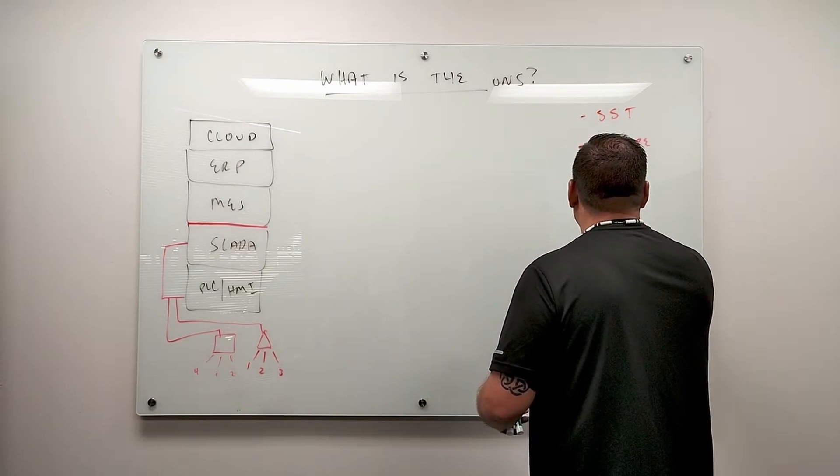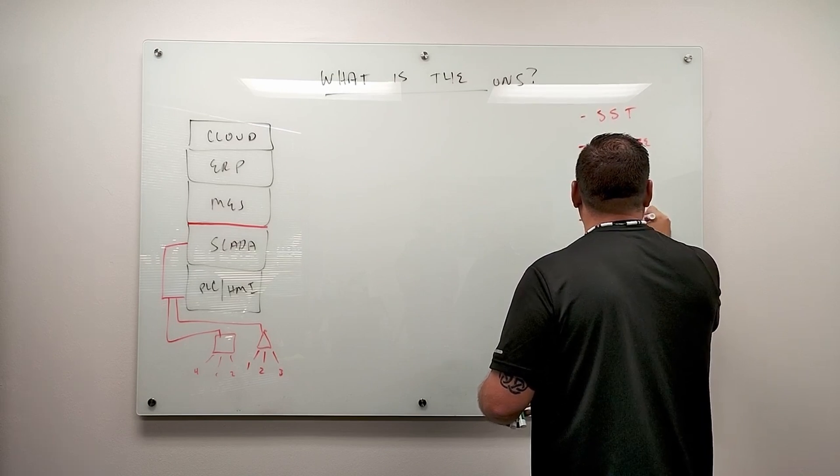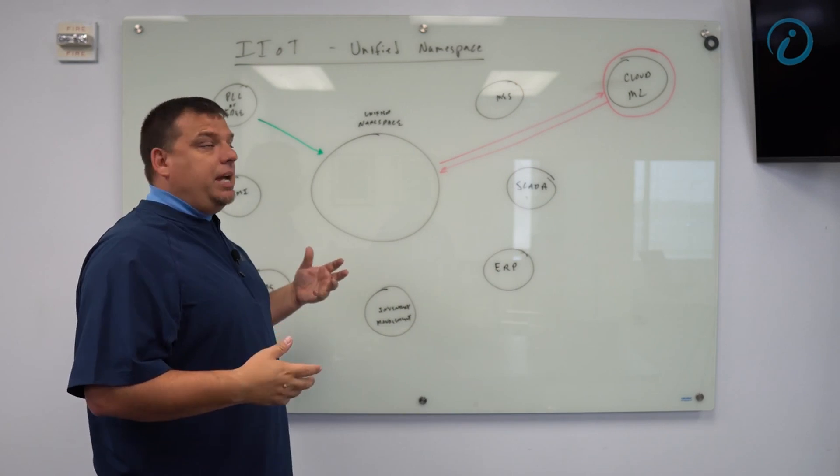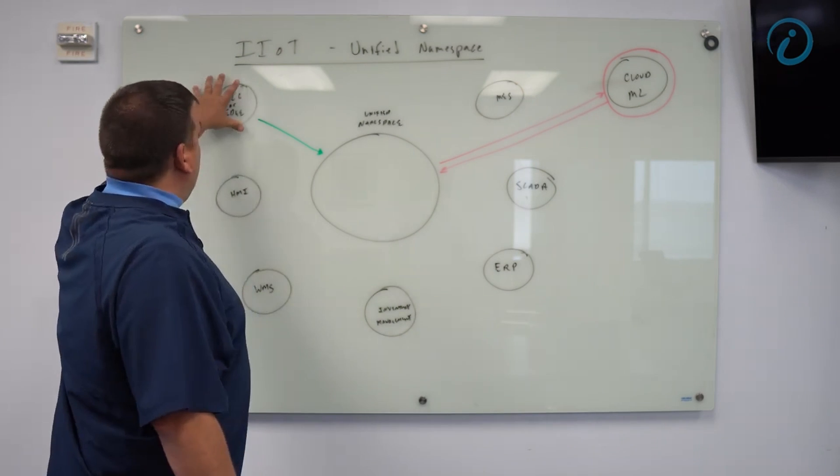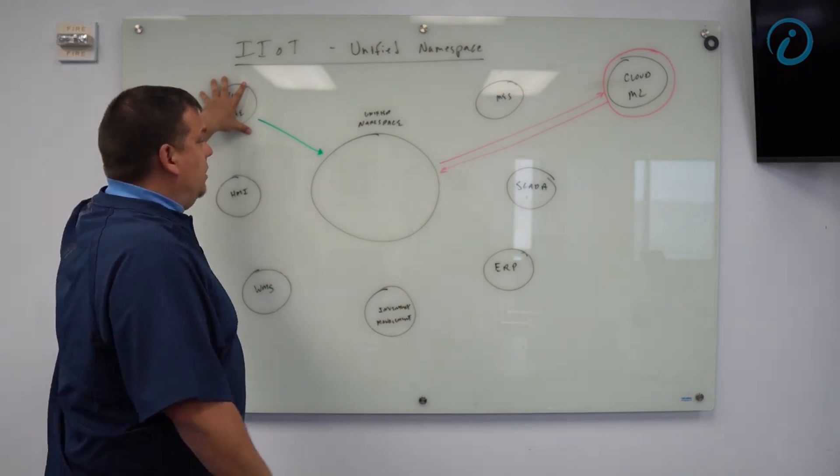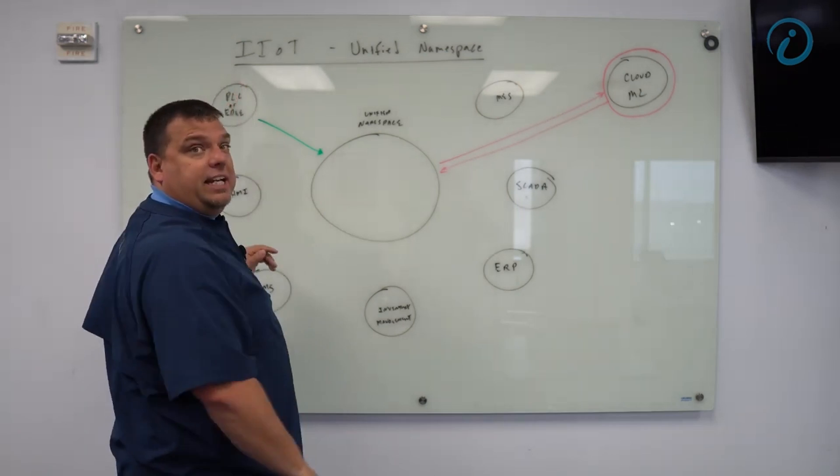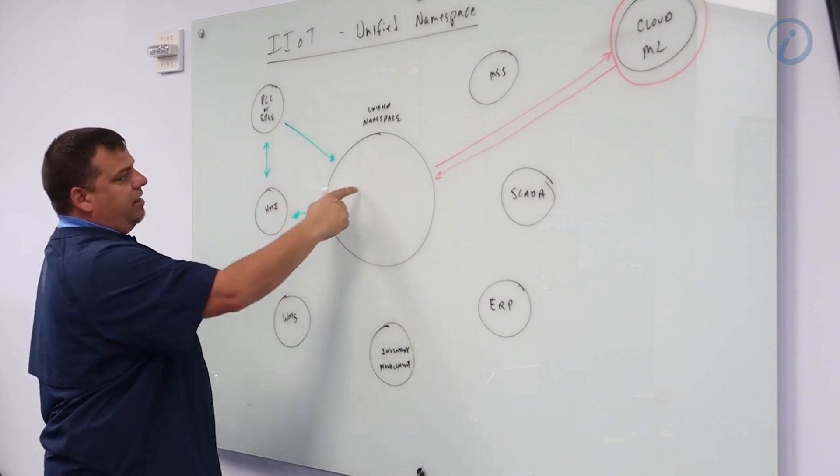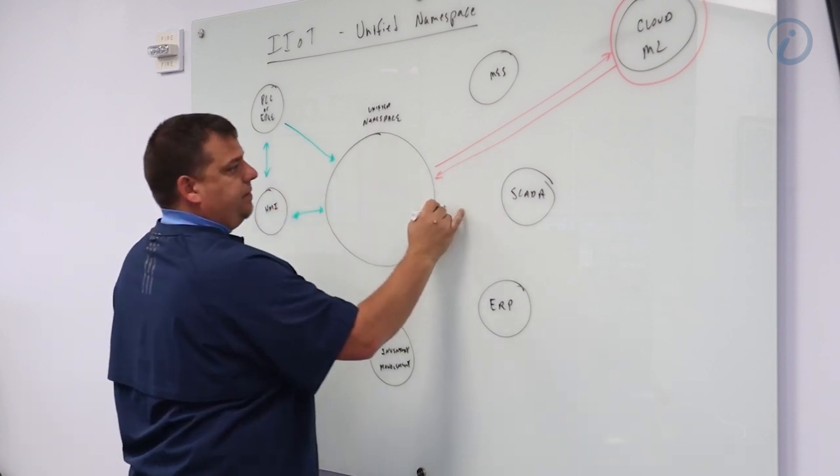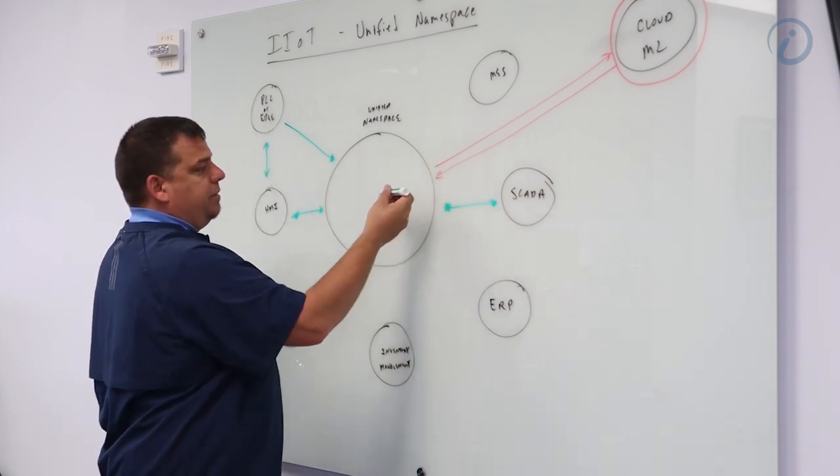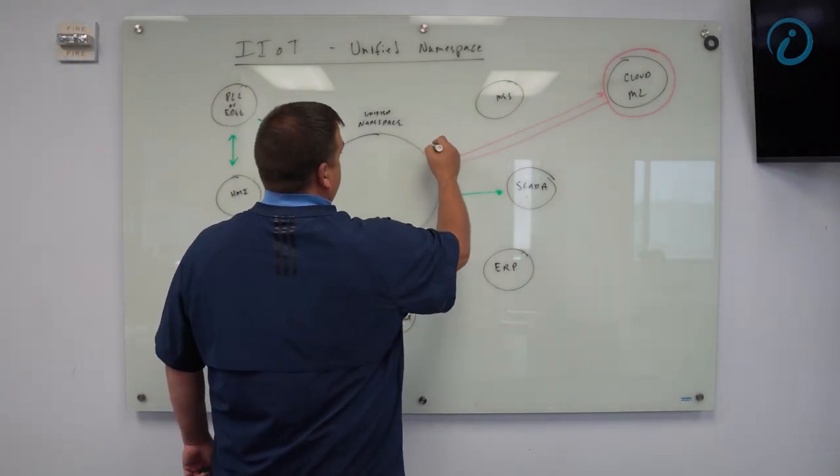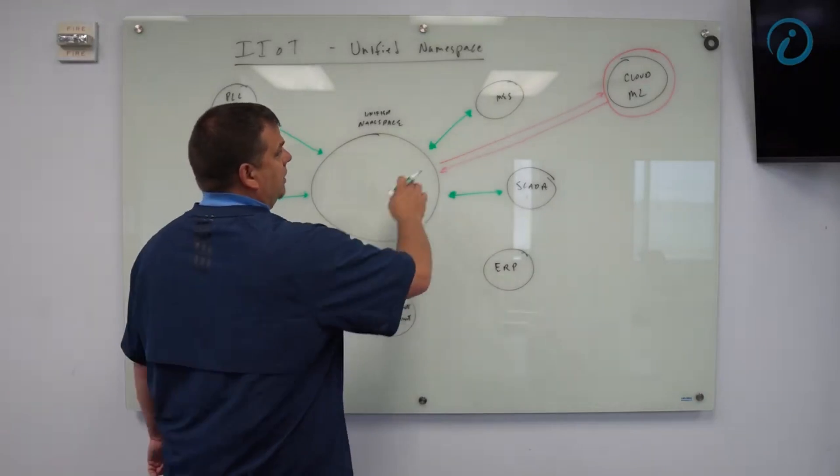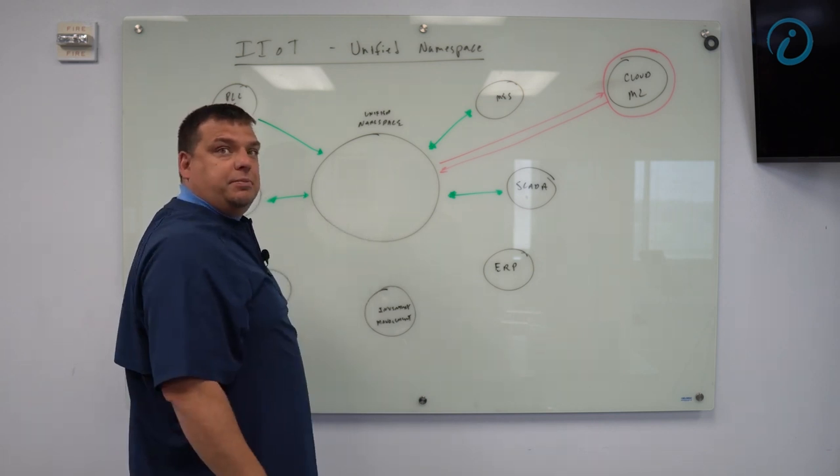And number four, it is the foundation of your digital future. So what we do is we treat all applications, we treat everything in the plant and on the plant floor as a node in the system. So what ends up happening is our PLCs publish their data into a unified namespace. The SCADA system and the HMI get their information from the unified namespace. The SCADA system may process it and then post that information back into the unified namespace. The MES system will then grab its information that it needs to do all of its post processing of data and it will then publish it back into the unified namespace.